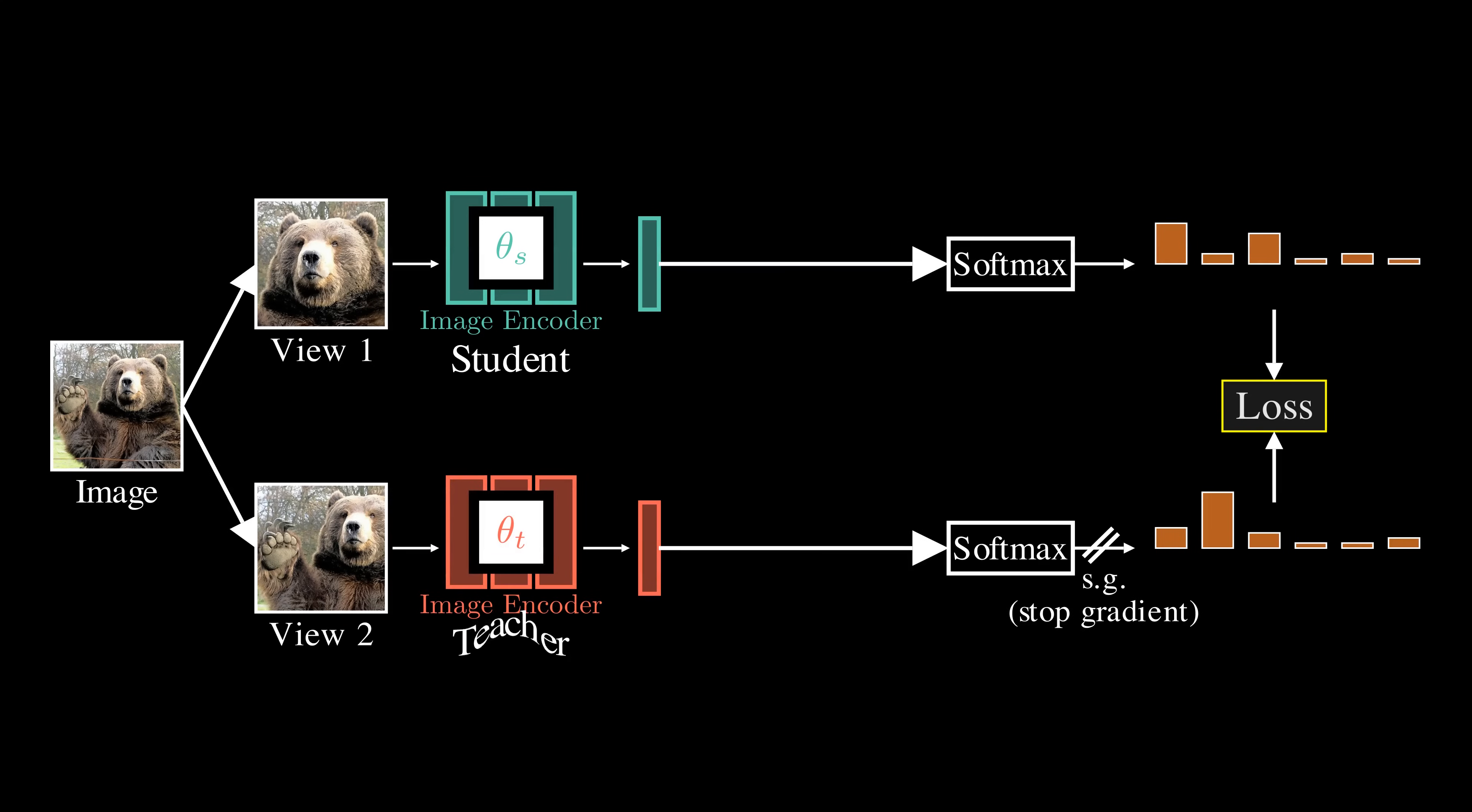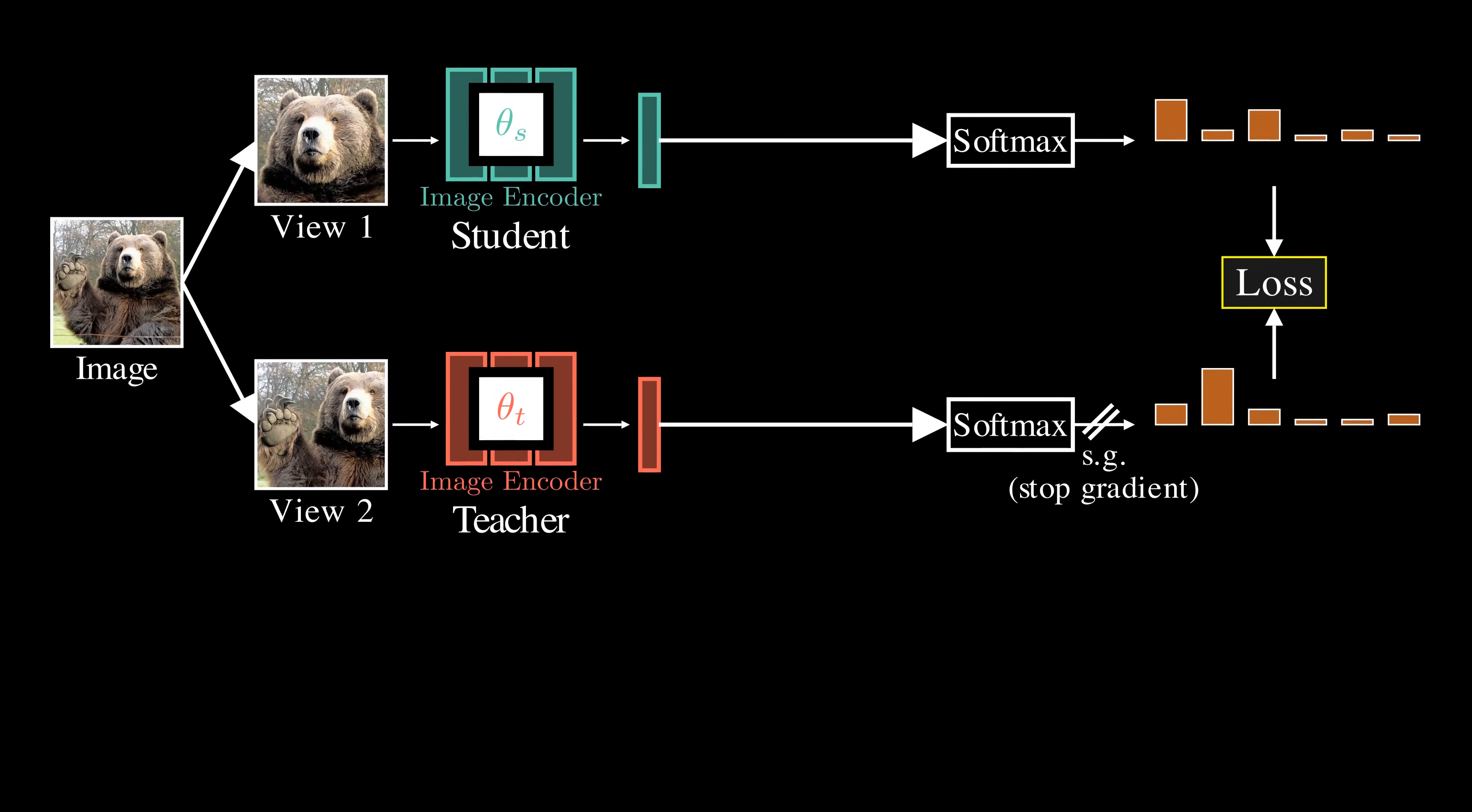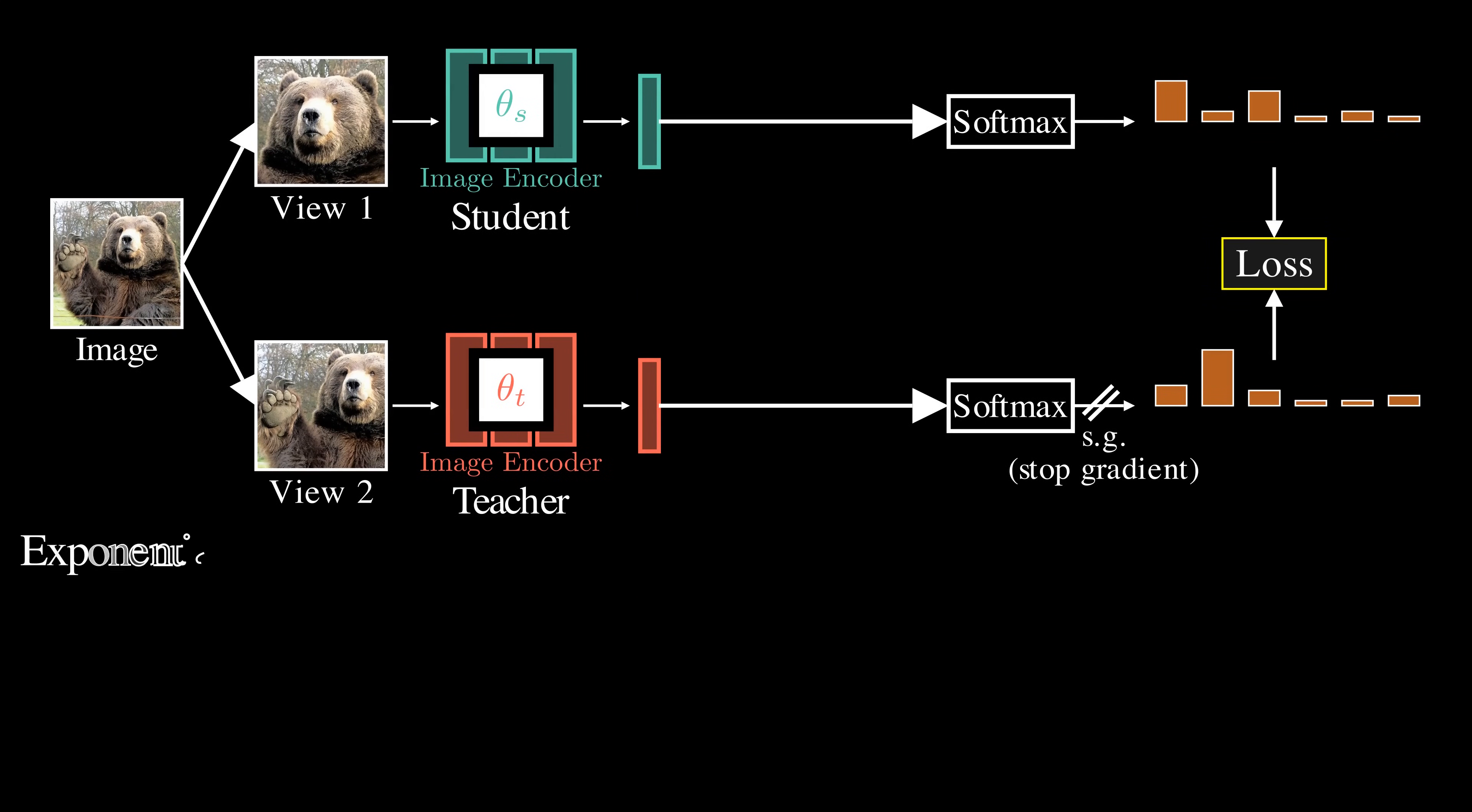Second, in knowledge distillation, the teacher model is usually already trained. But without label data, how do we get this teacher model? One effective method is to update the teacher model's weight as a moving average of the student's weights over time. This allows the teacher model to change gradually, providing a stable and consistent target for the student to learn from.